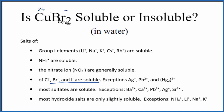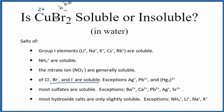When we put this copper 2 bromide in water it's going to dissolve. It breaks apart, or dissociates, into its ions. We'll have Cu²⁺ ions, which will be aqueous, and Br⁻ ions, which will be aqueous too. For every 1 Cu²⁺, we'll have 2 of the bromide ions.